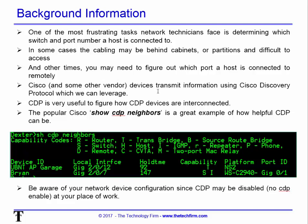Cisco and some other vendors transmit information using the Cisco Discovery Protocol, so we can leverage that. CDP is very useful to find out how other CDP devices are interconnected. Here's an example of a Cisco switch using the 'show CDP neighbor' command. You can see we've got this UBNTAP in the garage — that's a Ubiquiti device which also sends out CDP. So keep in mind that even though it's called Cisco Discovery Protocol, other vendors use it too. I can see the access point's port, the platform, and that a device called Brian is on port 7, a 2940, connected on gig 0/1 to gig 27 — so you can verify gig-to-gig connections.